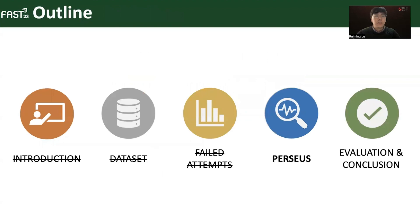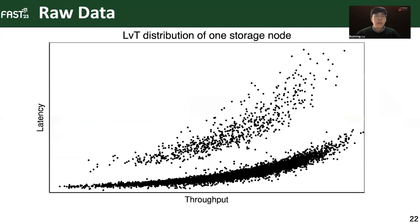Next, I will introduce the design of Perseus, which utilizes a light regression model and scoring mechanisms to detect fail-slow failures. Throughout this part, we use the latency versus throughput distribution within one storage node with one known fail-slow drive as an example to illustrate the detection process.